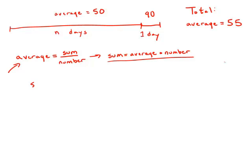So the sum for the first n days would be average 50 times number n, 50n. And then we're going to add to that 50n plus the 90 that we do on the final day.